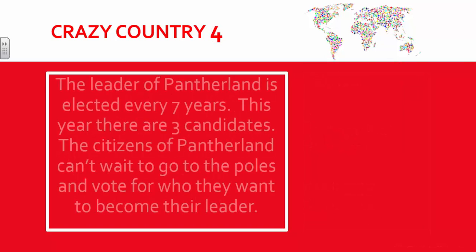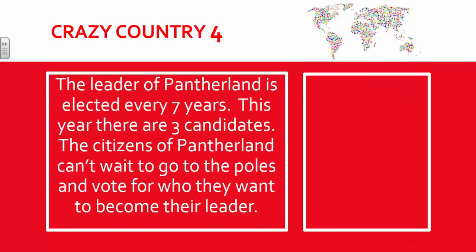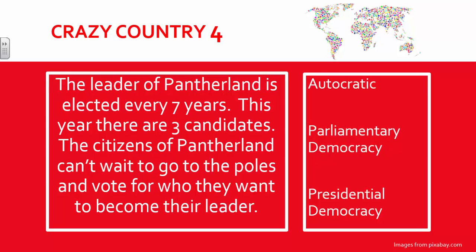Another example: the leader of Pantherland is elected every seven years. This year there are three candidates, and the citizens of Pantherland can't wait to go to the polls and vote for who they want to become their leader. This is a presidential democracy. If you choose to use this example, I would encourage you to change Pantherland to match your school mascot — maybe yours would be Lionland or Eagleland.